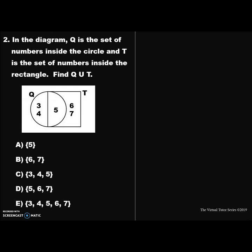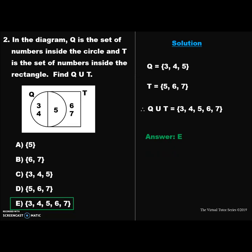Question 2. In the diagram, Q is a set of numbers inside the circle and T is a set of numbers inside the rectangle. Find Q union T. Solution: We have been given set Q to be {3, 4, 5} and set T to be {5, 6, 7}. Q union T is a set of elements that can be found in Q only, both Q and T, and T only. Therefore, Q union T is the set containing the elements 3, 4, 5, 6, and 7. Hence, option E is the correct answer.